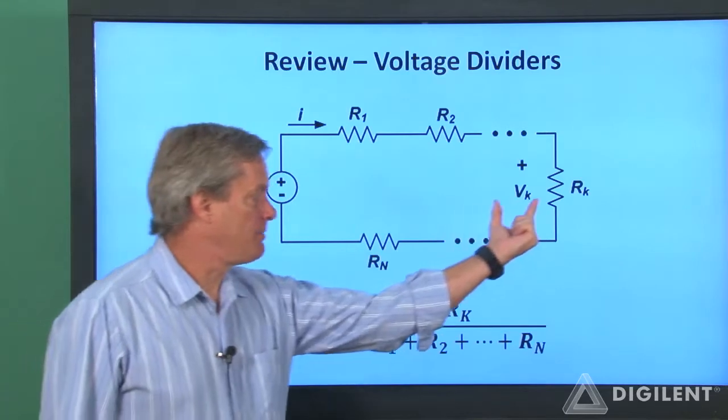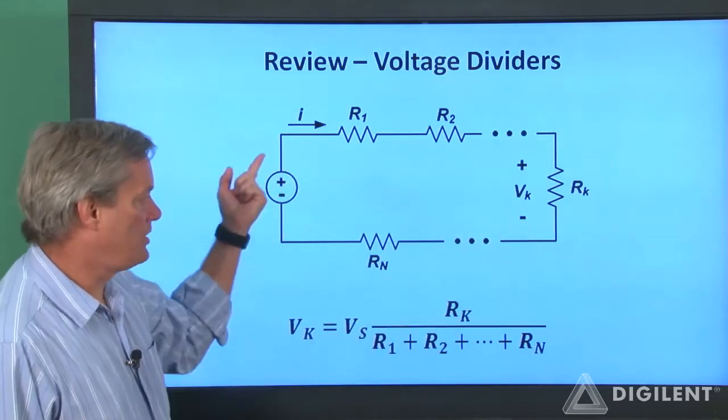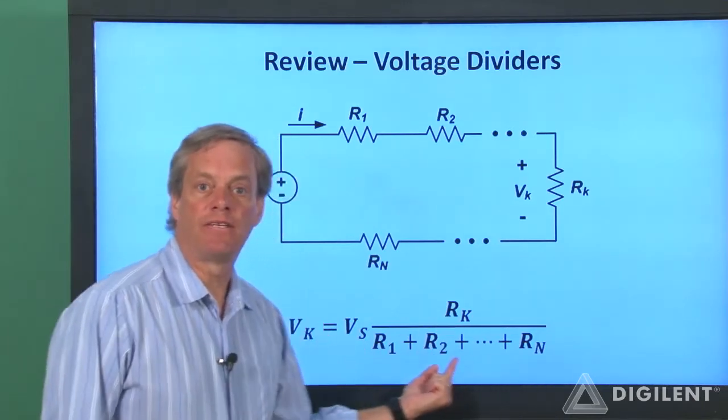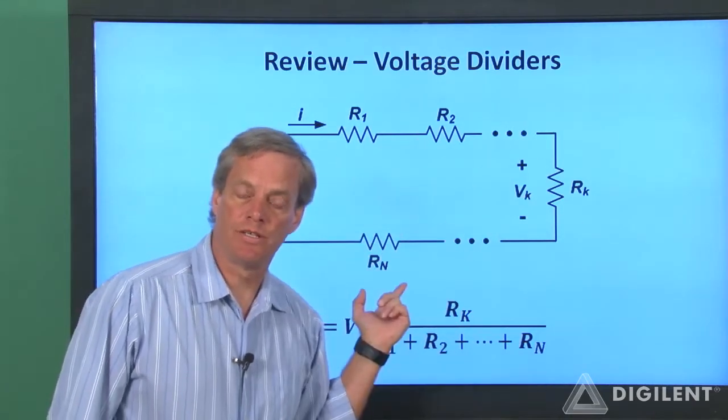The voltage drop, V sub K, is just the total voltage, V sub S, multiplied by the K-th resistance and divided by the sum of all the resistors in the series combination.